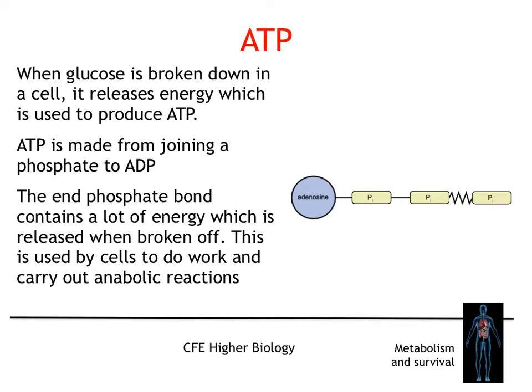When glucose is broken down, it releases the energy which is used to make ATP. ATP is made by the joining of an adenosine diphosphate molecule — ADP — plus an inorganic phosphate molecule. When it's formed, you've got this bond here that can be broken. This is the end phosphate bond; it contains lots of energy, and the energy is released when this bond is broken, forming ADP and an inorganic phosphate.